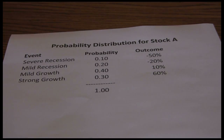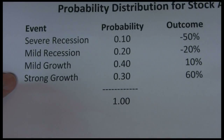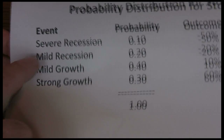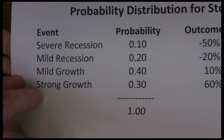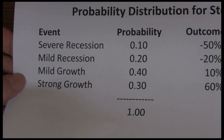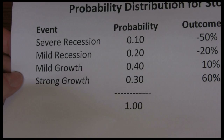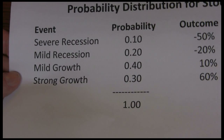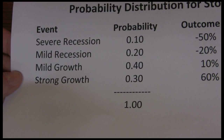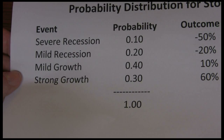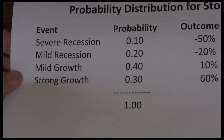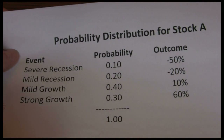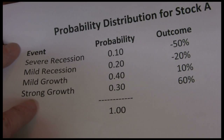Here's an example of a probability distribution for a particular stock. I picked four different possible outcomes tied to the overall economy: a severe recession, a mild recession, mild growth, and strong growth. We know there are more than four possible outcomes when we buy a stock, but there are a near-infinite number of possibilities, so the probability distribution is just a quick generalization. Typically you'll see people use three to eight possible scenarios, and we're using four here based on economic conditions.